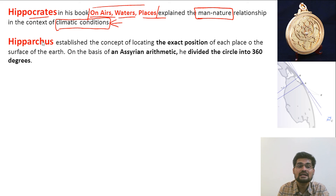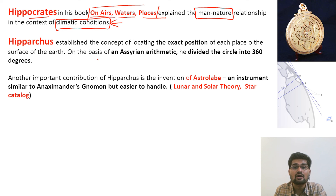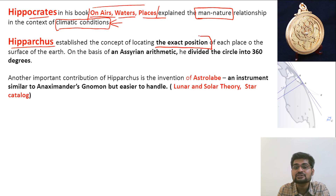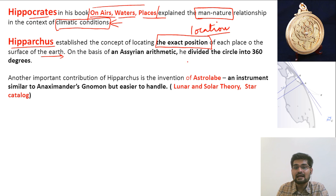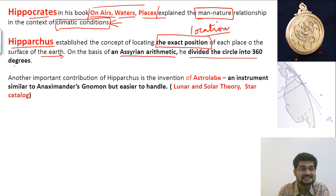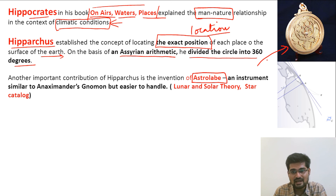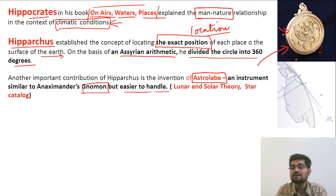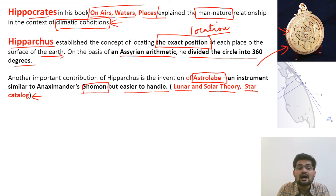Hipparchus was one of the most important scholars of the later Greek period, famous for his contributions to astronomy. He established the concept of locating the exact position of each place on the surface of the earth — the locational concept in geography comes from Hipparchus. Using Assyrian arithmetic, he divided the circle into 360 degrees. He also utilized a new instrument, the astrolabe, which was easier to handle than Anaximander's gnomon and led to the development of various lunar and solar theories. He also made a star catalog.